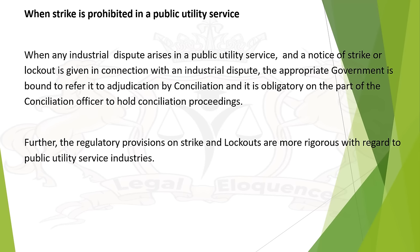When a strike is prohibited in public utility services: when an industrial dispute arises in a public utility service and a notice of a strike or lockout is given in connection with an industrial dispute, the appropriate government is bound to refer it to adjudication by conciliation and it is obligatory on the part of the conciliation officer to hold conciliation proceedings. The regulatory provisions on strikes and lockouts are more rigorous with regards to public utility service industries. When a strike notice is given by a trade union in a public utility service, the appropriate government is bound to appoint a conciliation officer.